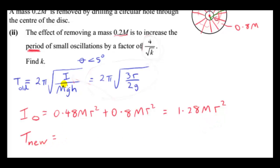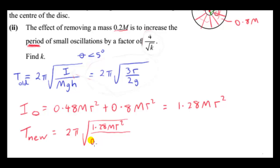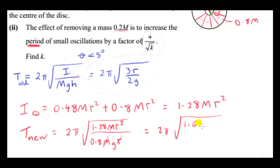Now we can get T_new. Using the period formula T = 2π√(I/MgH), we have I = 1.28MR², mass = 0.8M, and H = R. The M's cancel. We get T_new = 2π√(1.28R / 0.8g) = 2π√(1.6R/g).